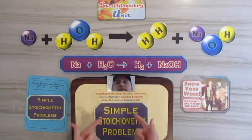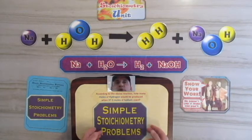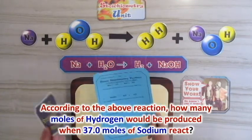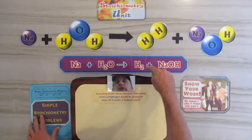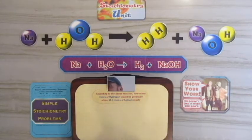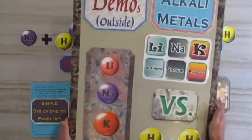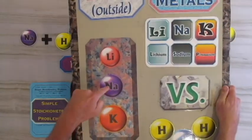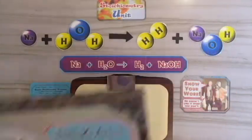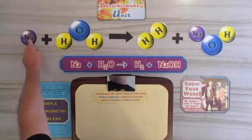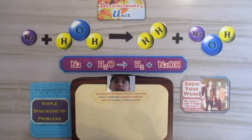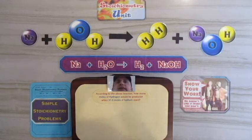Here we have a simple stoichiometry problem. I didn't want to use one of the exact same ones from the sheets, so I chose a different one. This reaction — we've seen it before in one of our first demos: lithium, sodium, potassium versus water — the alkali metal demo, pretty dramatic. I decided to put the water upside down; it can be in any orientation, so I flipped it.